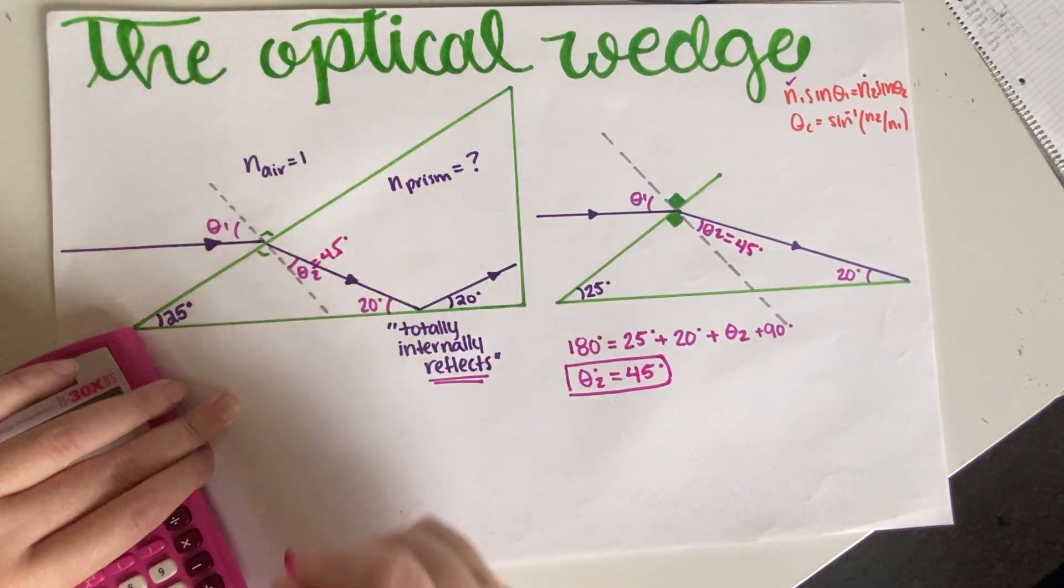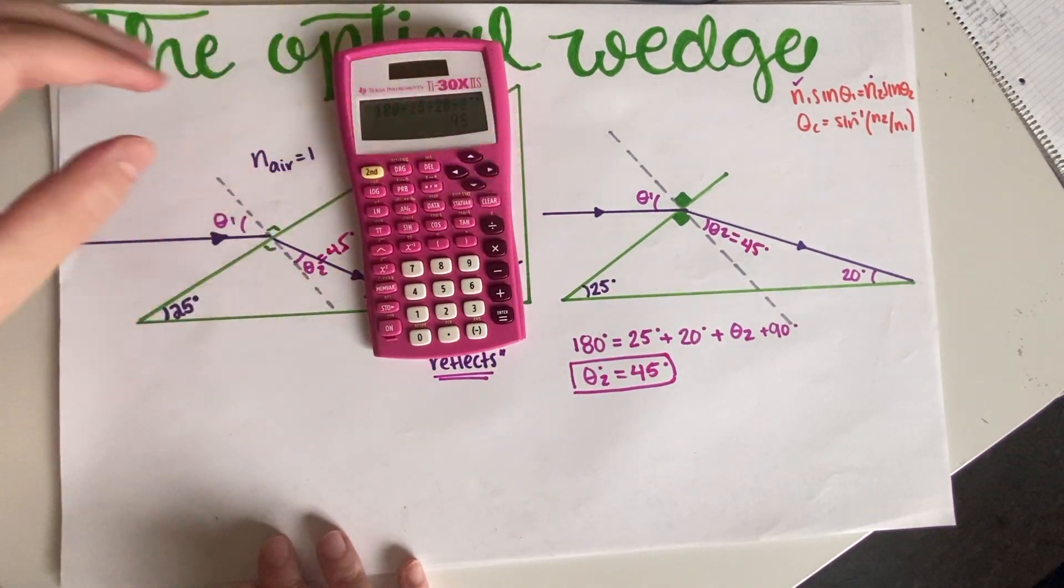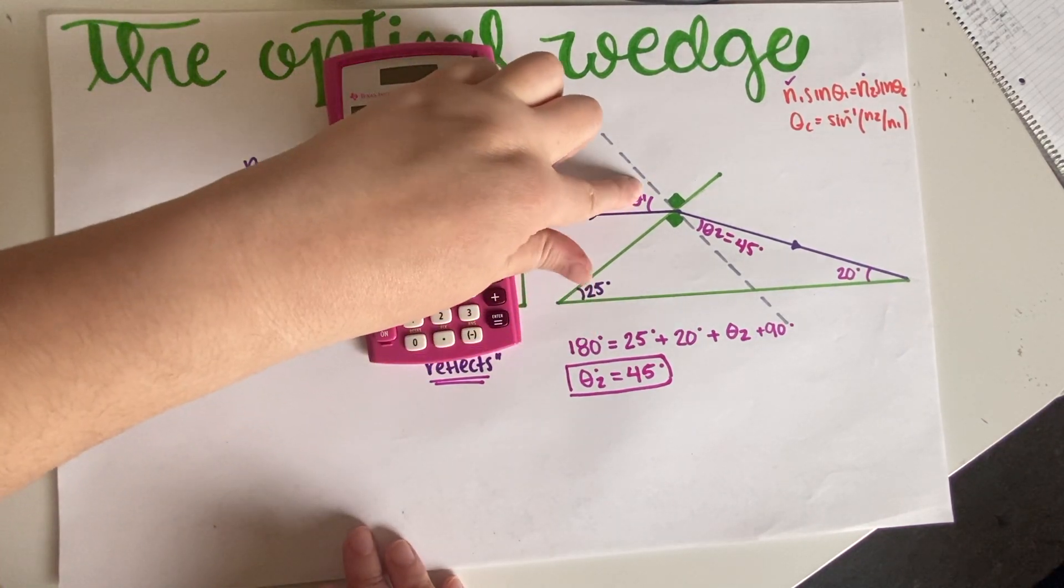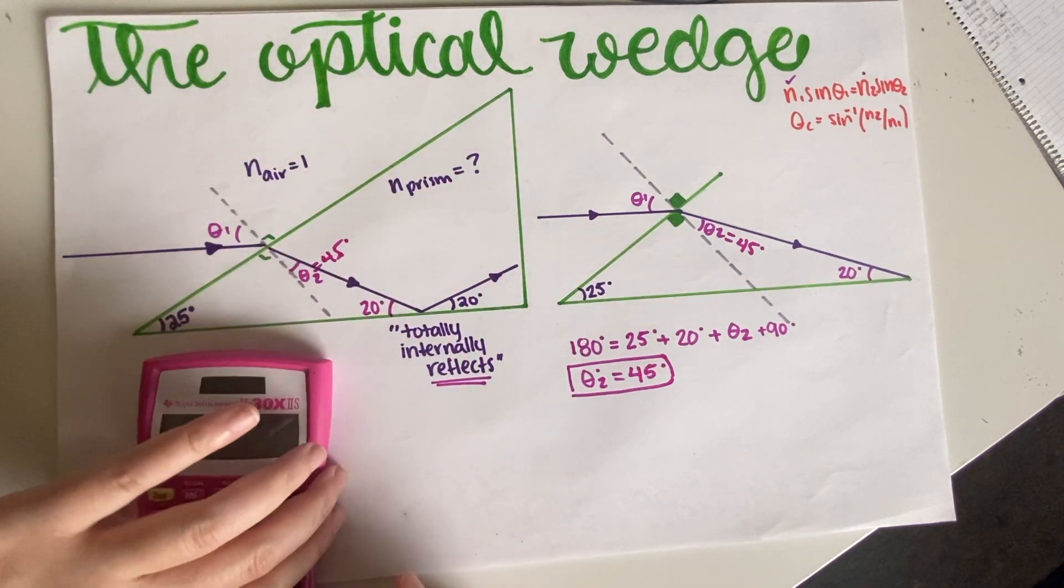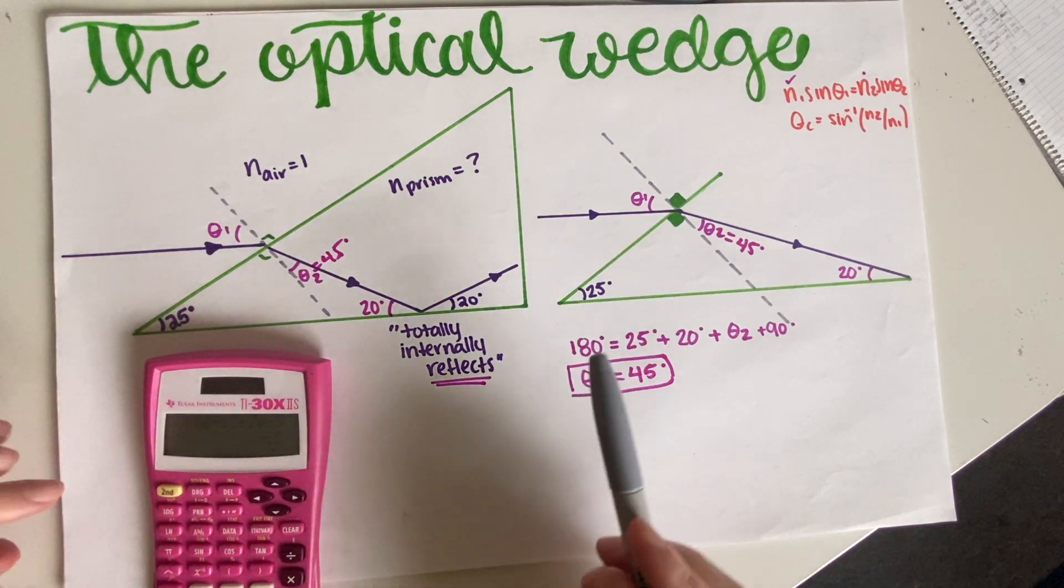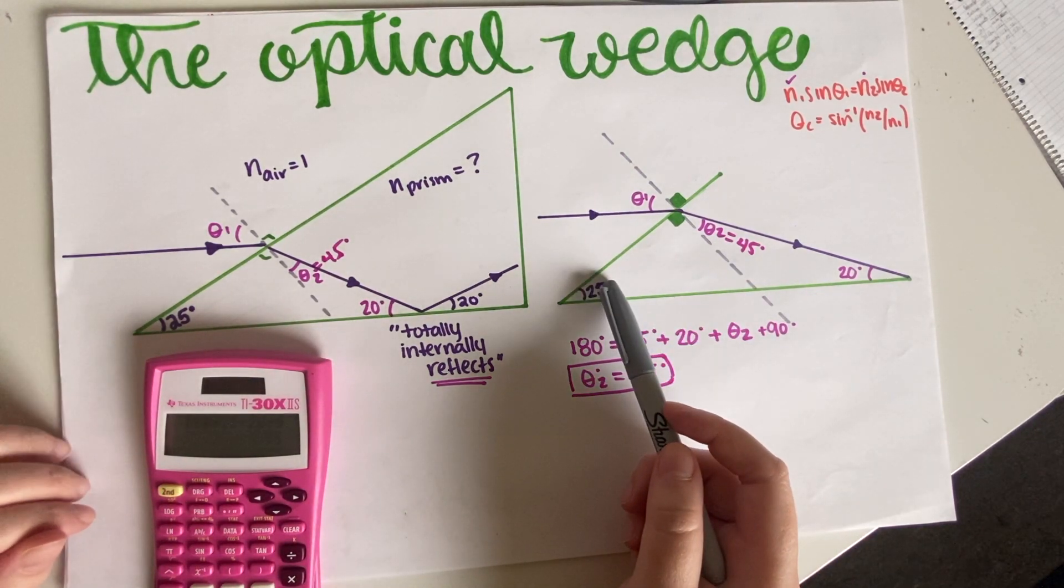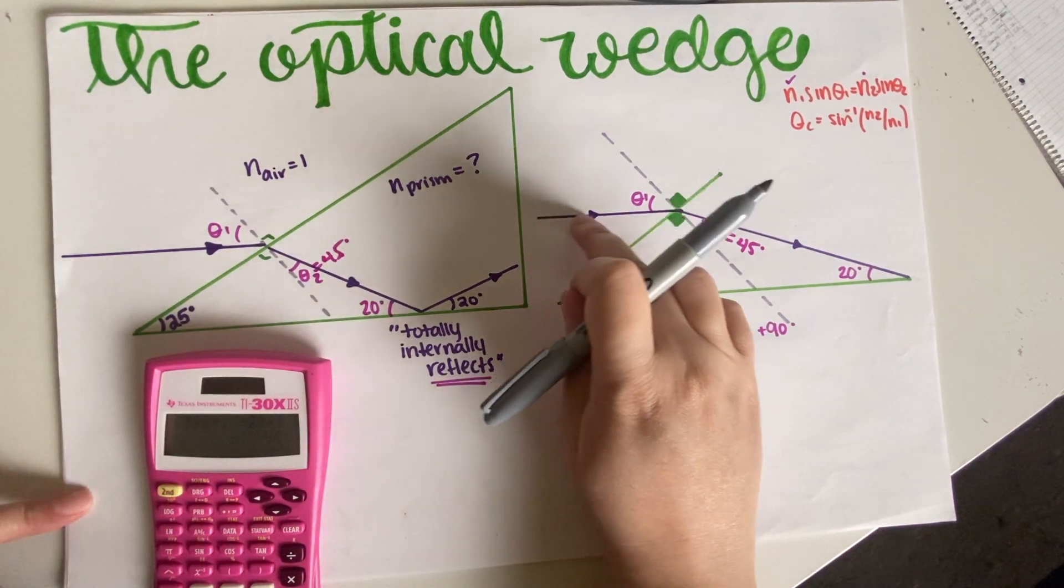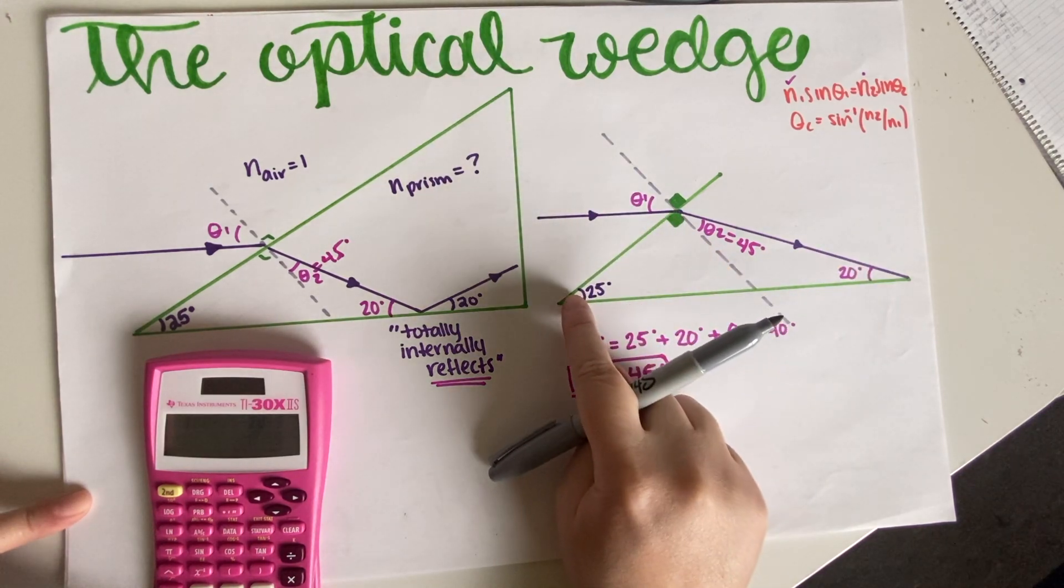So now that we figured out this triangle over here, well, this 45 degrees—how do we figure out the incident angle, the angle which I've labeled number one, this one over here?